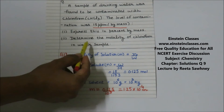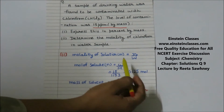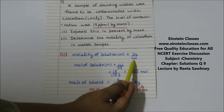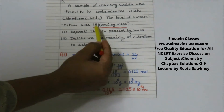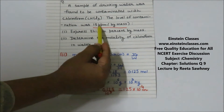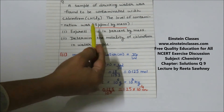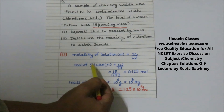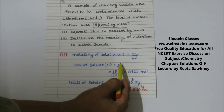Now we find the molality of the solution. Molality is defined as moles of solute divided by mass of solvent in kilograms. We have 15 ppm, meaning 15 grams of chloroform is present in 10^6 grams of solution. We can find the moles of solute as 15 divided by the molar mass of chloroform.